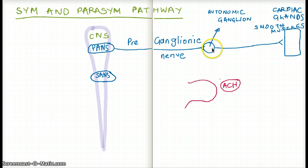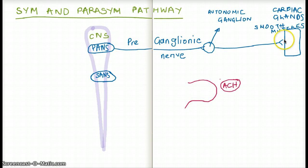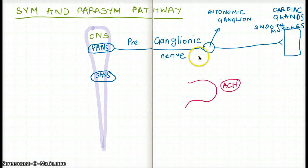The autonomic ganglion is then stimulated and makes another synapse with the effector organ — this is our parasympathetic nervous system. The neurotransmitter released by the postganglionic nerve is also acetylcholine. So we have acetylcholine at both the preganglionic synapse and at the postganglionic synapse onto the effector organ.